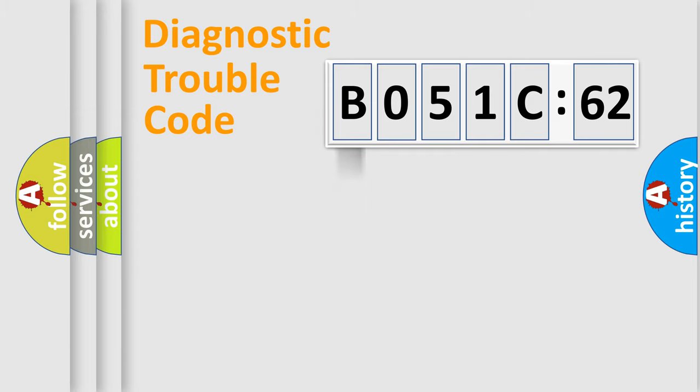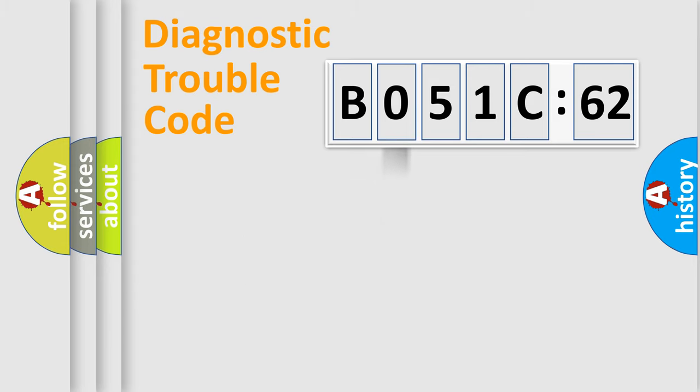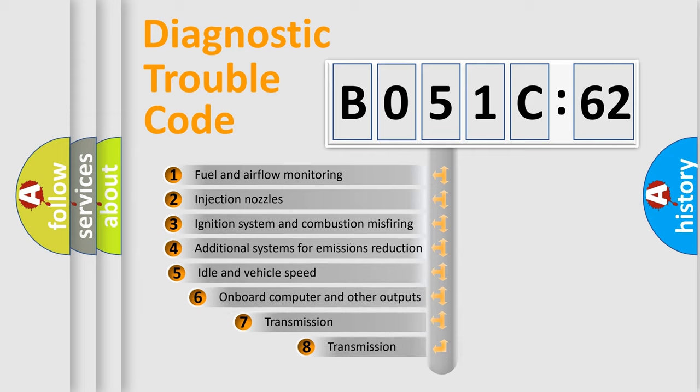Powertrain, Body, Chassis, Network. This distribution is defined in the first character code. If the second character is expressed as zero, it is a standardized error. In the case of numbers 1, 2, or 3, it is a more precise expression of the car-specific error.